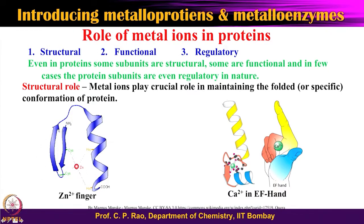Look at one example called zinc finger — I will come to its full characteristics in the zinc story. On the right side you can see a helical component (alpha helix), and on the left a ribbon-like beta sheet. These two are tied together through a zinc ion via certain amino acid residue side chains — cysteine, cysteine, histidine, histidine. This is called structural rigidity: zinc brings together the beta sheet and alpha helix, so in this case zinc is referred to as a structural element.